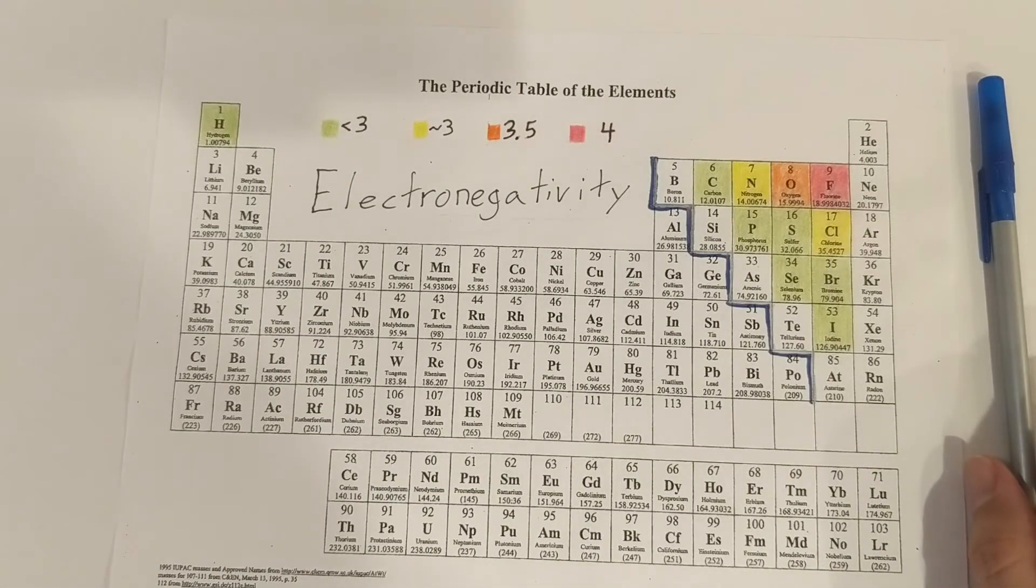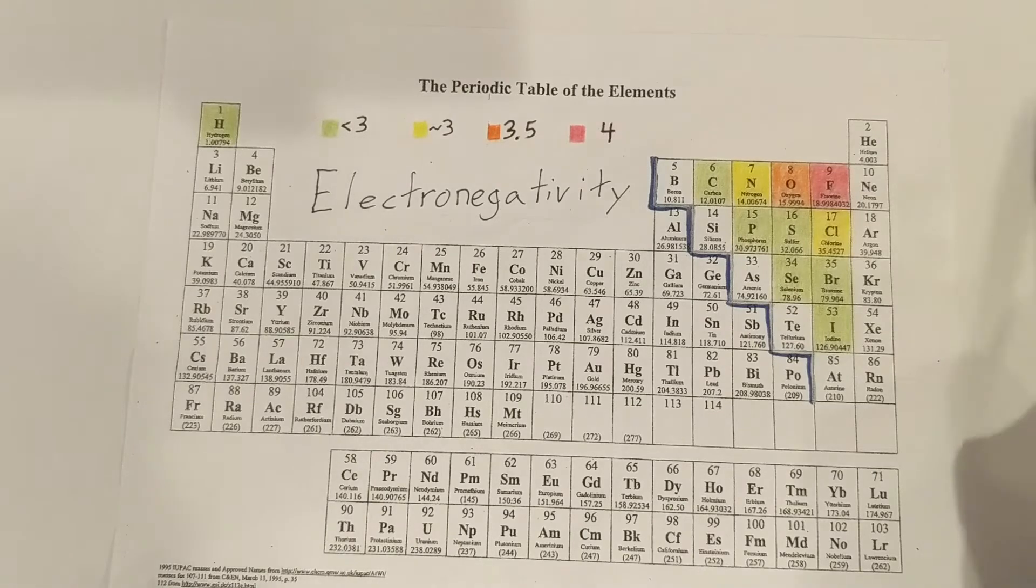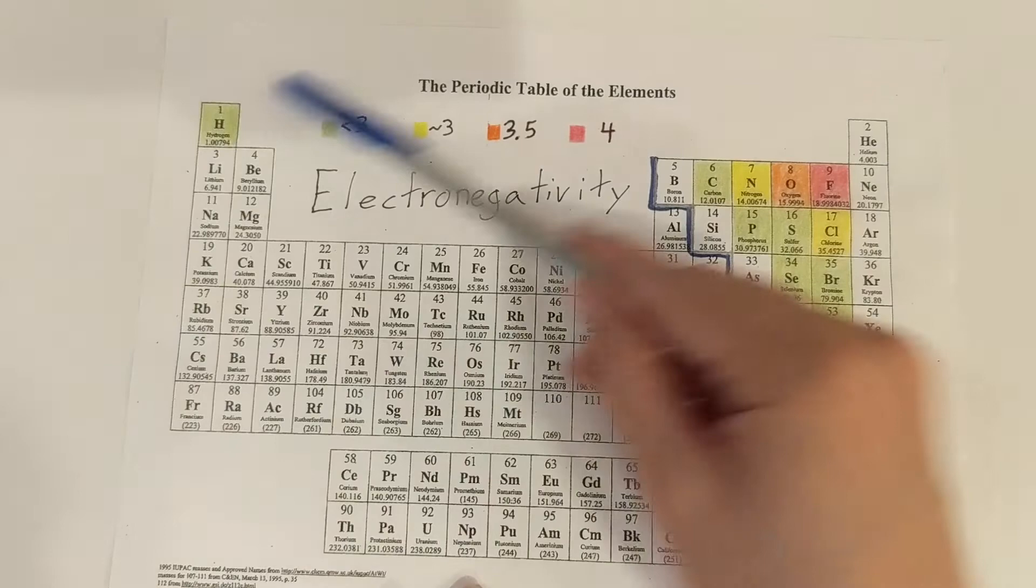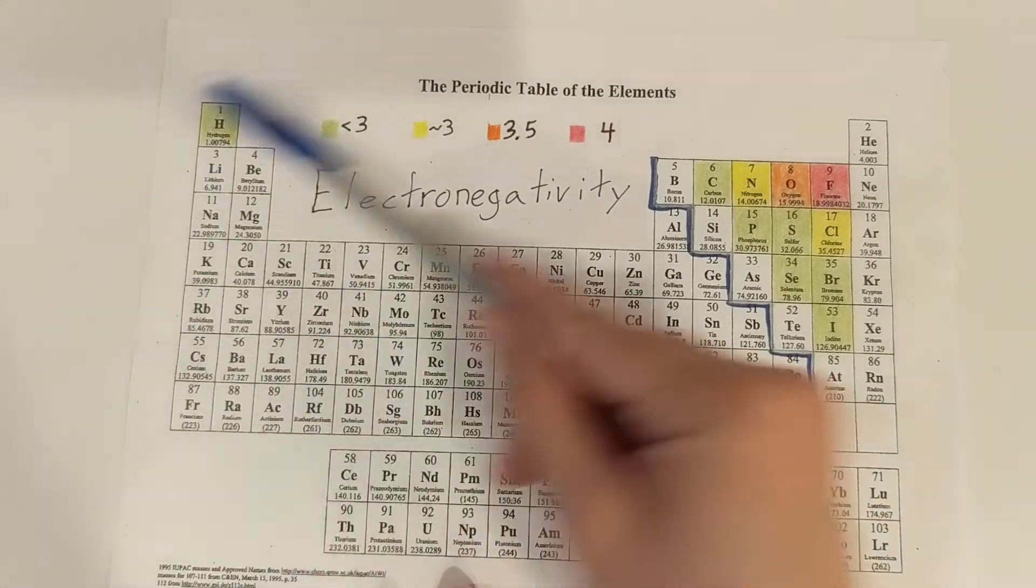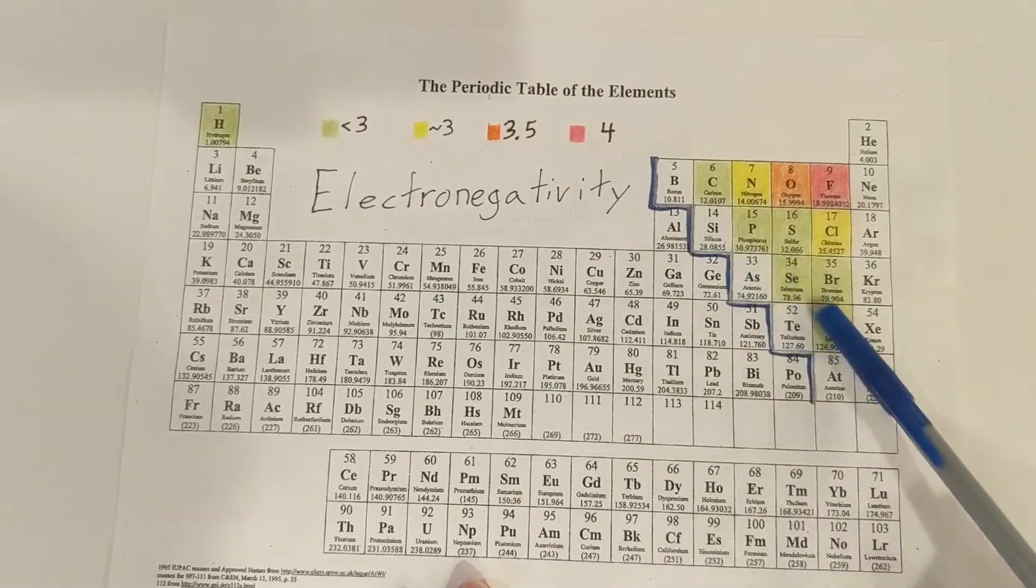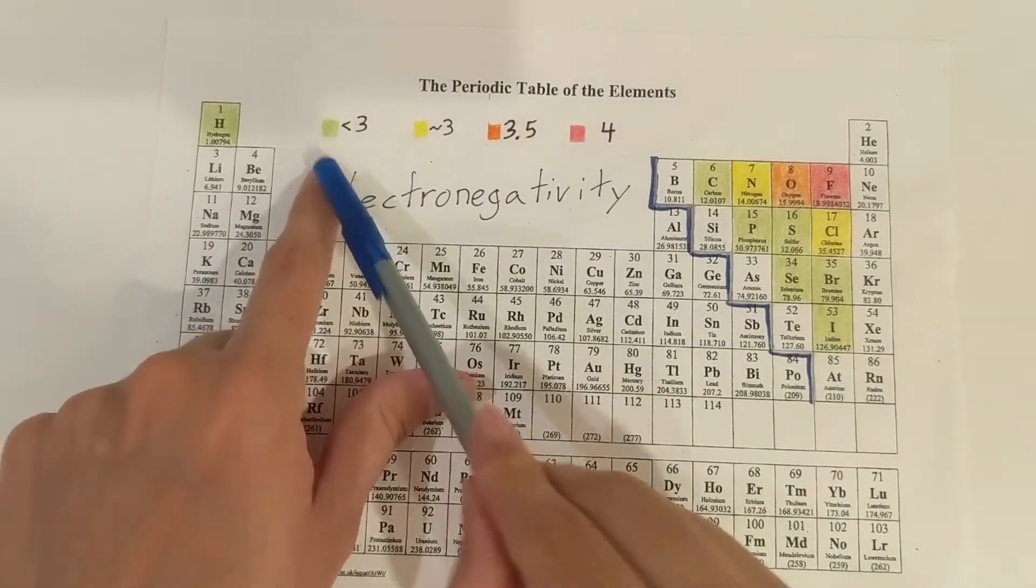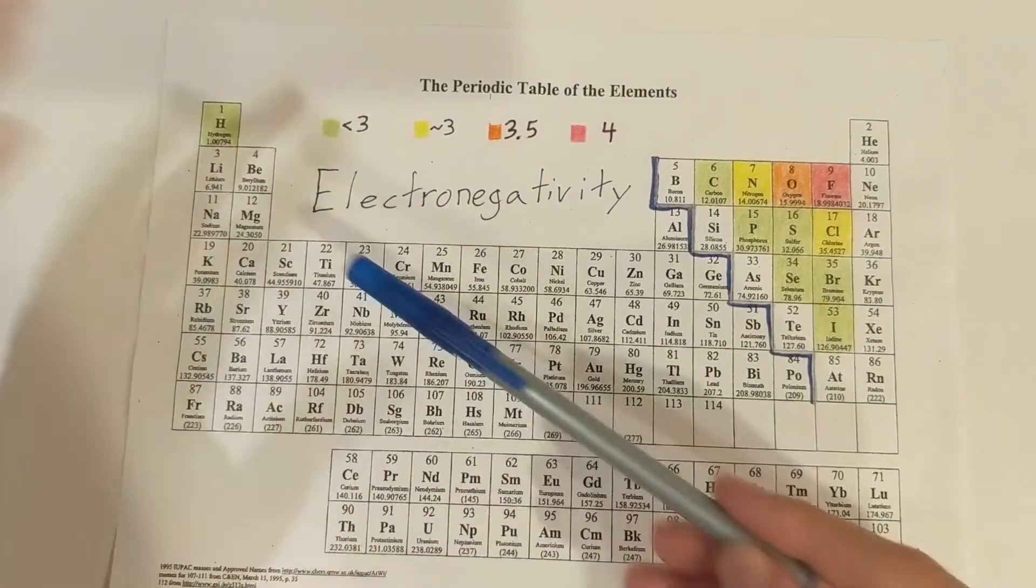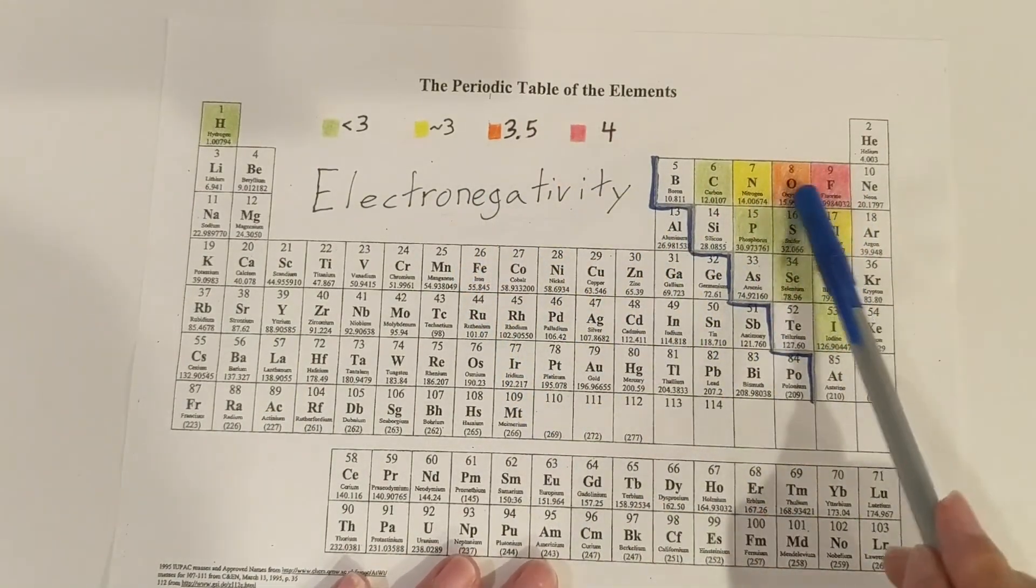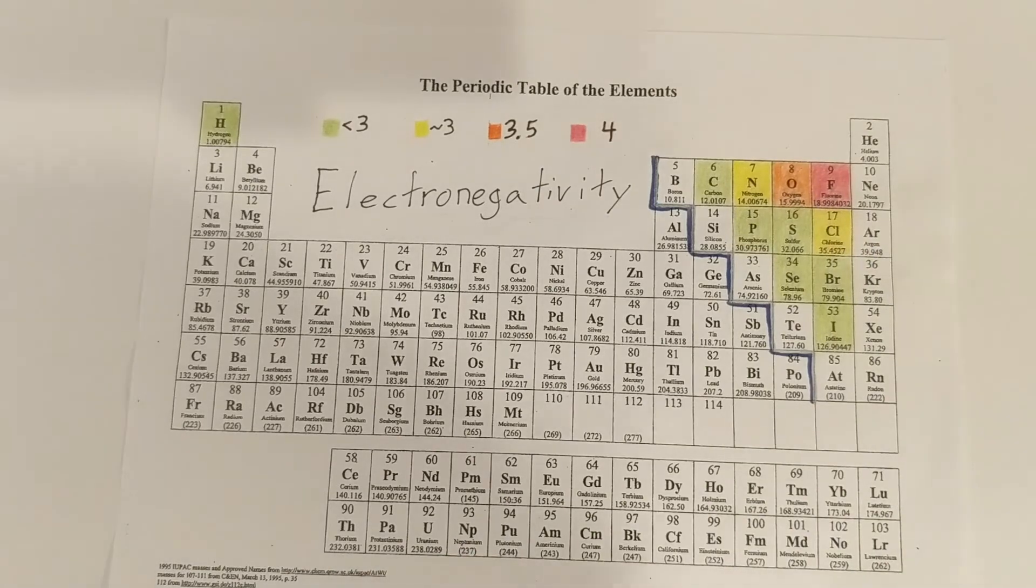So we're going to be talking a lot about electronegativity in the coming weeks, specifically with our non-metals. So this will be a very useful periodic table to use. And with our non-metals, we can see, I did a color coding right here, less than three would be green, about three is yellow. And then our two elements with our highest electronegativity would be oxygen and fluorine. And this means the higher electronegativity means they want to pull electrons towards them more.